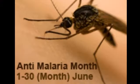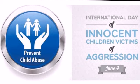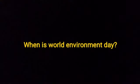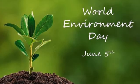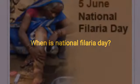When is World Anti-Malaria Month? June. When is International Day of Innocent Children Victims of Aggression? 4th June. When is World Environment Day? 5th June. When is National Filaria Day? 5th June.